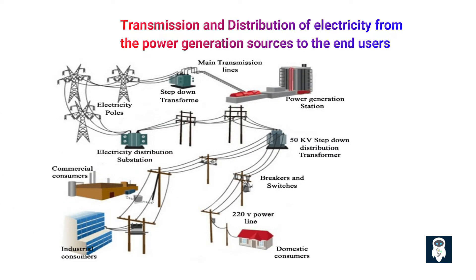Power electrical network loss refers to the energy that is dissipated or wasted during the transmission and distribution of electricity from the power generation sources to the end users. Power electrical network loss is a critical issue that affects the efficiency and reliability of electrical systems.